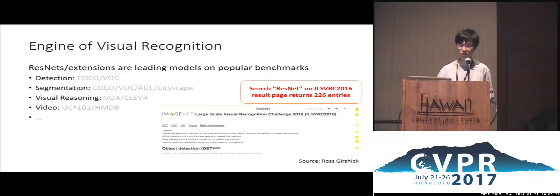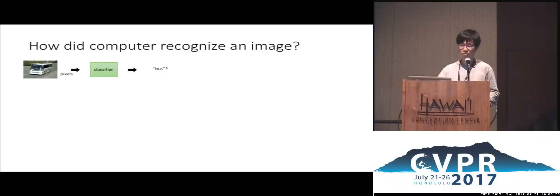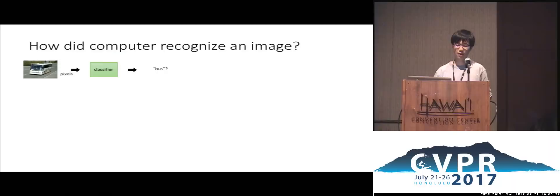Now let's see how computers recognized images before the prevalence of deep learning. Consider the simplest case: given an image, we can represent it as pixels and train a classifier on top of those pixels. The classifier can be very simple — a nearest neighbor classifier, SVM, or random forest. However, it is unlikely for this model to work well.